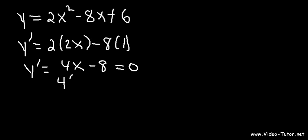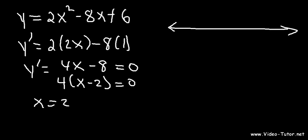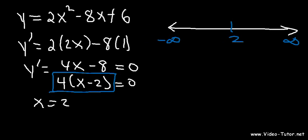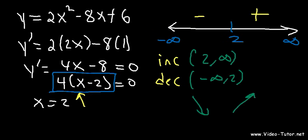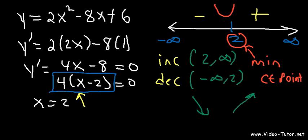Let's set that equal to 0. Now what I'm going to do is factor out a 4, and you can see that our critical point is x is equal to 2. So then let's make a number line. Let's say if we plug in a number greater than 2 — if we plug in 3 for x, 3 minus 2 is positive. If we plug in 1 for x, 1 minus 2 is negative. So we know that the function is increasing between 2 and infinity, and it's decreasing between negative infinity and 2. Since it goes from negative to positive, we have a minimum — a local min at x equals 2, which is also the critical point.